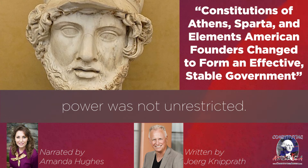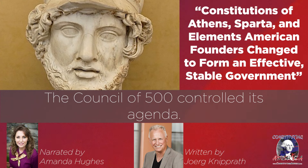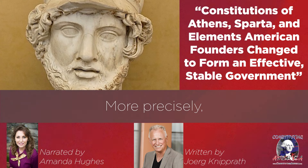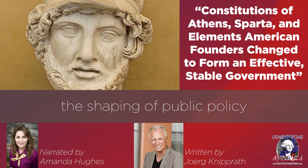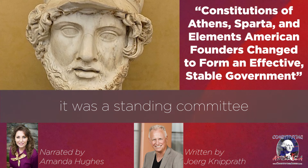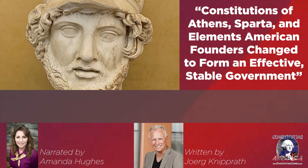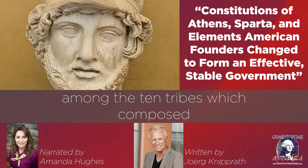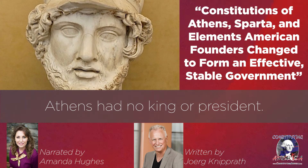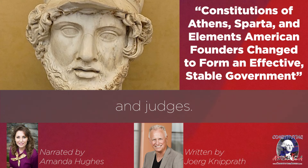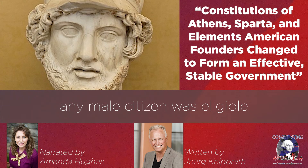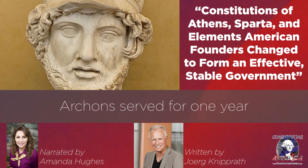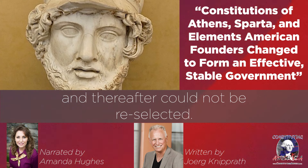As noted, the Assembly's power was not unrestricted. The Council of 500 controlled its agenda. More precisely, since a body of 500 could not realistically expect to control the shaping of public policy and its administration, it was a standing committee of the Council that performed this work. The standing committee of 50 rotated monthly among the 10 tribes which composed the Council. Athens had no king or president. The Archons were senior magistrates and judges. They were selected by lot and, in theory, by the 4th century BC, any male citizen was eligible for the office. Archons served for one year and, therefore, could not be re-selected.